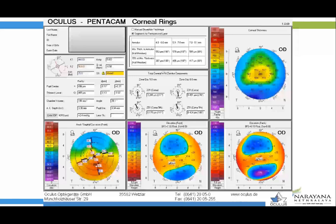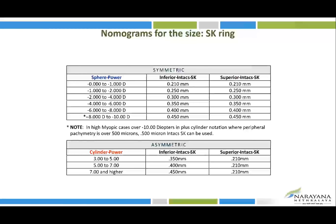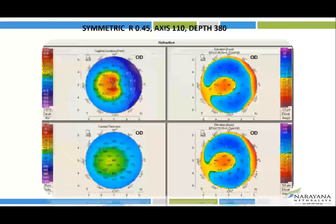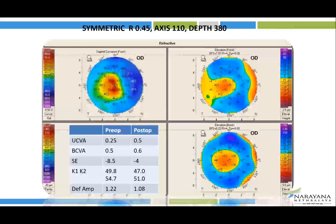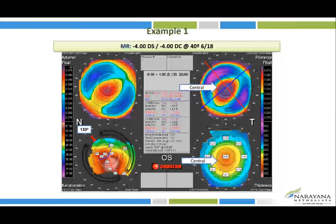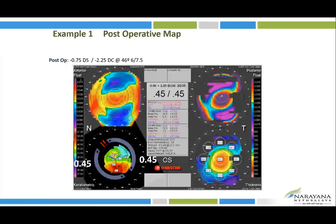Symmetric rings are planned for symmetrical cones. In a centered cone with symmetric ring planning, there is post-operative reduction in K values with improved BCVA. For a case with a central cone and myopic error of approximately minus 8 diopters, normogram would suggest a 0.4 or 0.45 ring, but since rings underperform, a 0.45 symmetric ring was chosen, with significant reduction in spherical error and good outcome postoperatively.